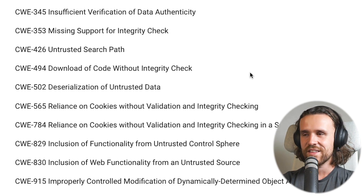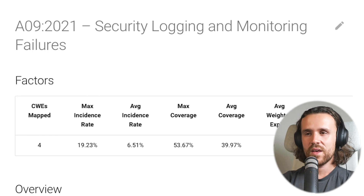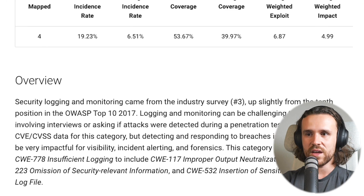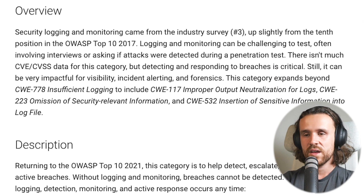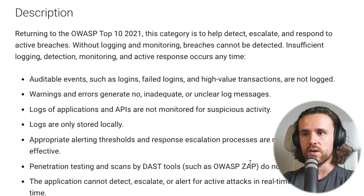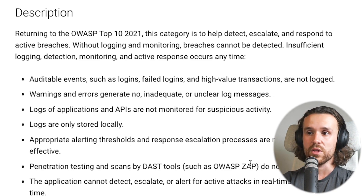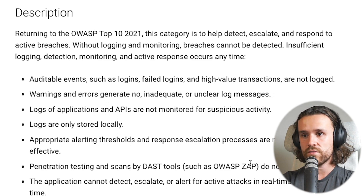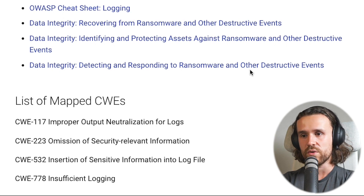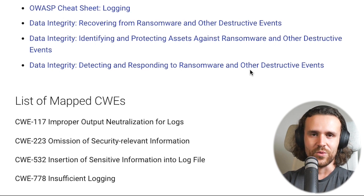At rank nine we have security logging and monitoring failures, which came back into the 2021 list. It covers auditable events such as logins and failed logins not being logged, warnings and errors generating no or unclear log messages, and logs being stored only locally rather than on a log server. There are four mapped CWEs, including improper output neutralization for logs and insufficient logging.